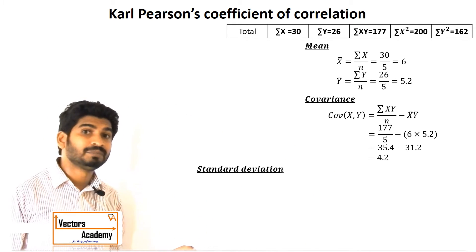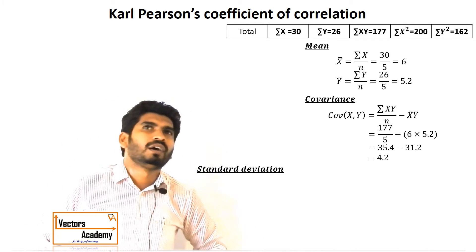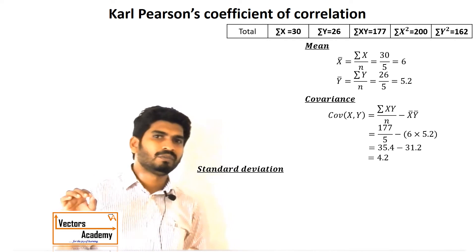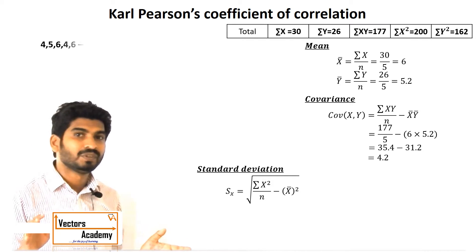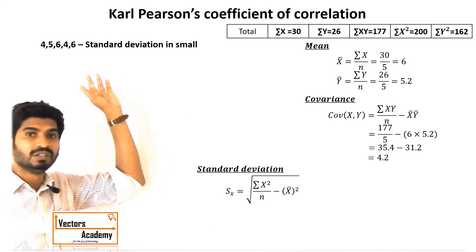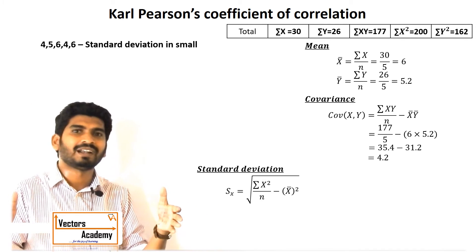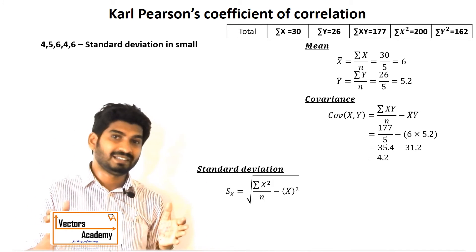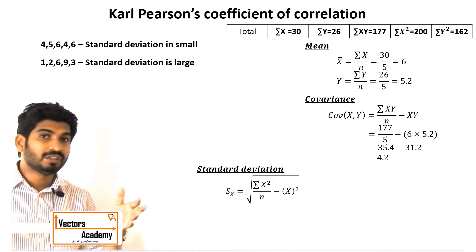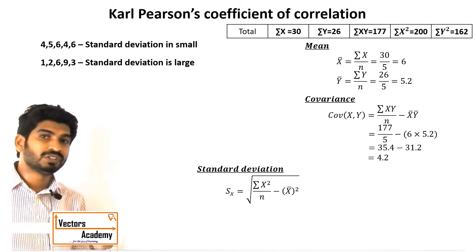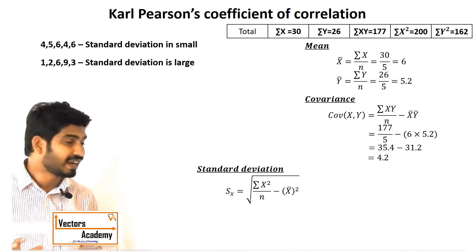Next comes the standard deviation, which is an important topic. Standard deviation basically measures how widely the values are scattered. For example, values clustered between 4 and 6 have a small standard deviation, while values that are widely spread have a larger standard deviation.